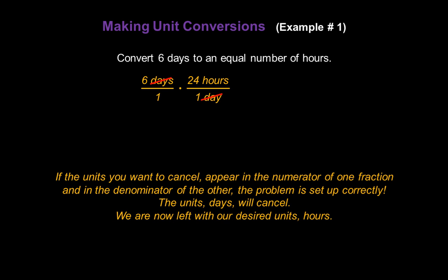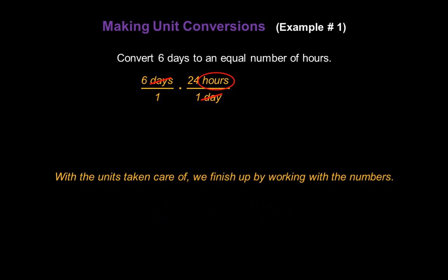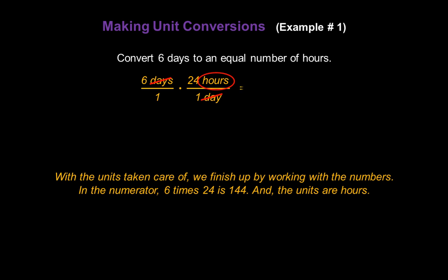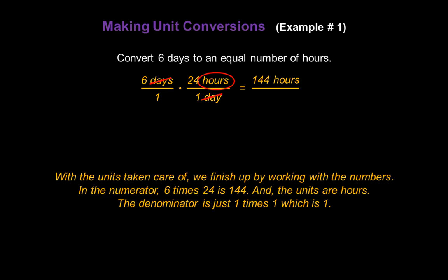With the units taken care of, we finish up by working with the numbers. In the numerator, 6 times 24 is 144, and the units up there are hours. In the denominator, 1 times 1 is 1. So, 6 days is equivalent to 144 hours.